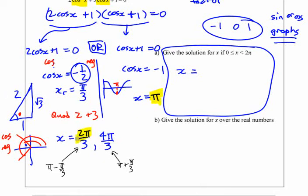If you really want to, you can put them in order, numerical order. 2π over 3, π, 4π over 3. Those are the three answers.